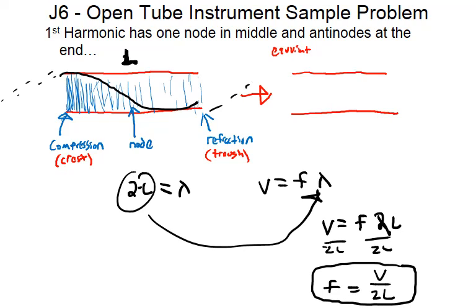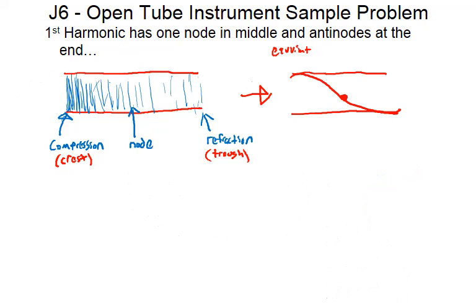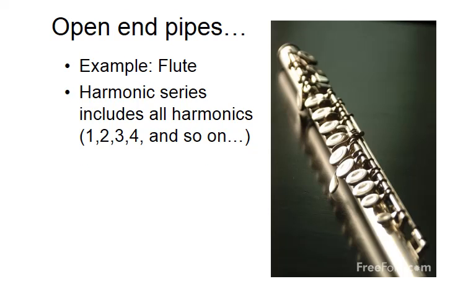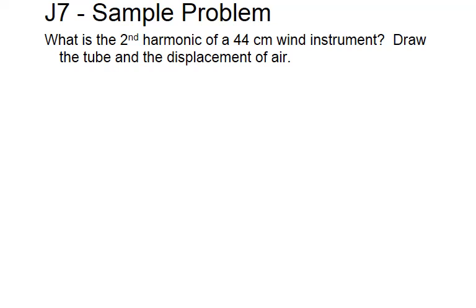That equation for the first harmonic looks just like what we had with strings. The general formula uses integer n, where for the first harmonic n = 1. It turns out that open-end instruments have all the harmonics — first, second, third, fourth, and so on — and it's actually the superposition of all those different harmonics inside the same tube.